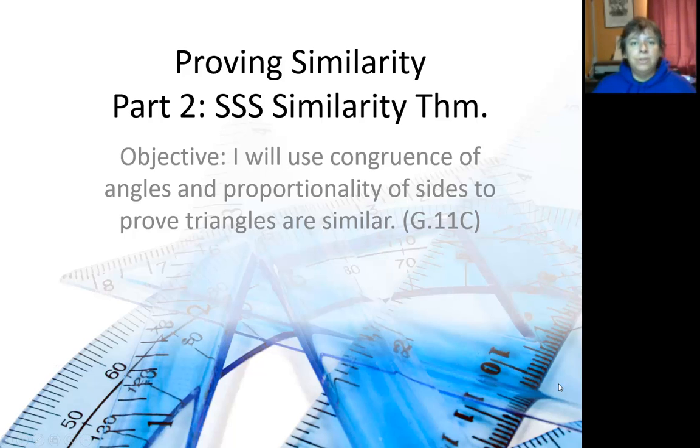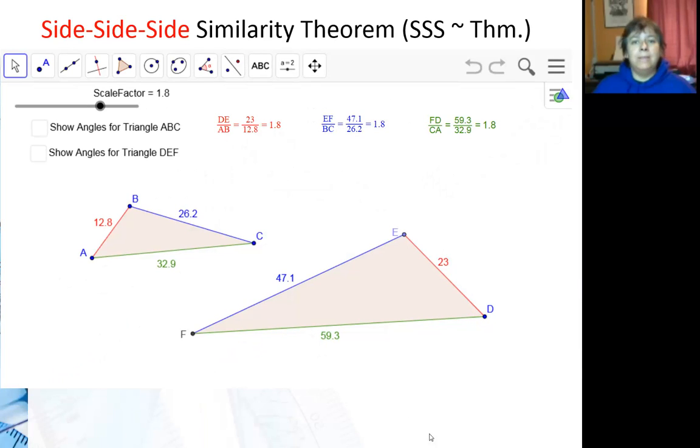We just looked at similarity using angles, and now we're going to look at similarity using sides. So what I'm going to say is that these two triangles have all three sets of sides that are proportional.